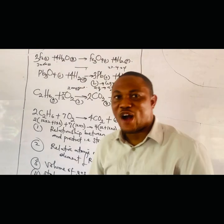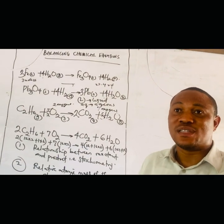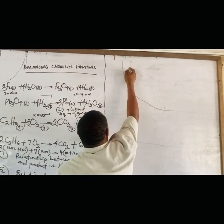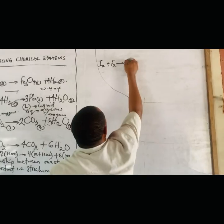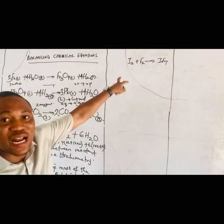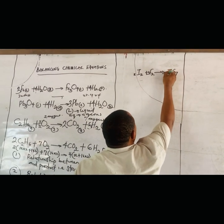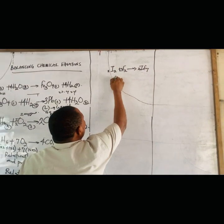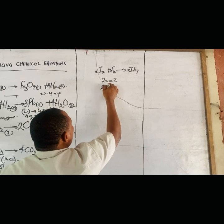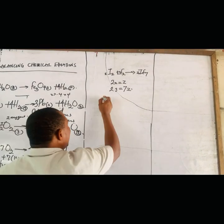Now let me use simultaneous equations to balance these equations, for those who were asking for the full video. I'll start from the equation I posted in the short video and then do the others. In that short, I was balancing an equation — let's say IF₇ type — using simultaneous equations. What I did was let one position be x, another be y, and another be z. For iodine: I have 2 on the left, so 2x = z (equation 1). For fluorine: I have 2 on the left, so 2y = 7z (equation 2). Let x = 1.